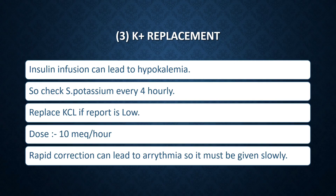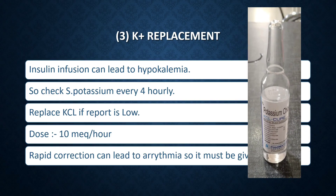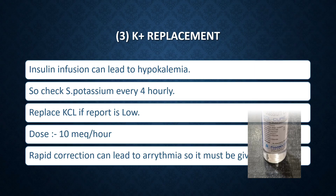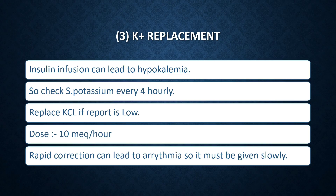The third most important aspect of DKA management is potassium replacement, because both insulin infusion and bolus insulin can lead to hypokalemia. Check serum potassium every 4 hours. If it is low, replace with KCl at a dose of 10 mEq per hour.